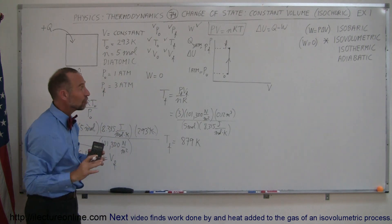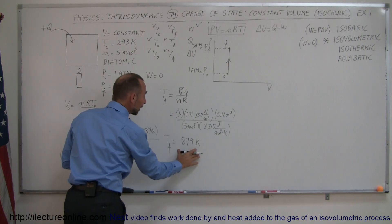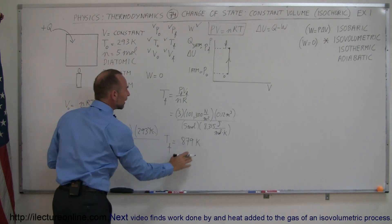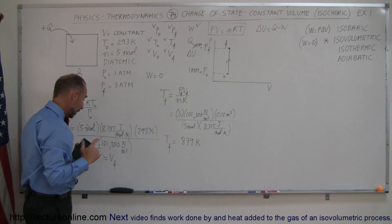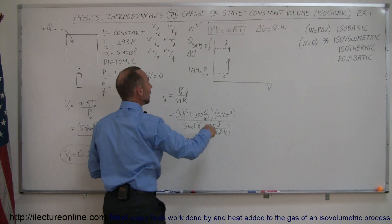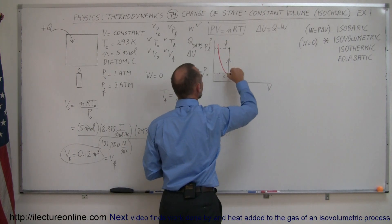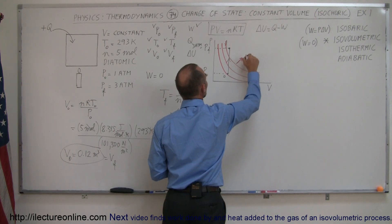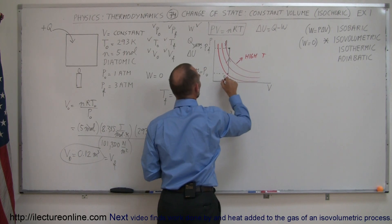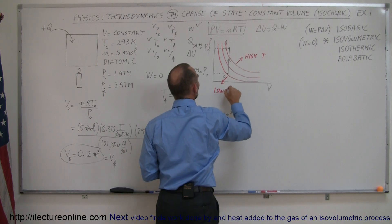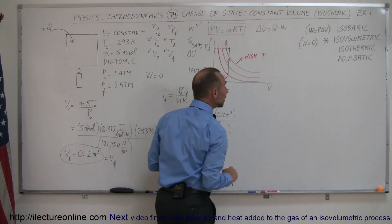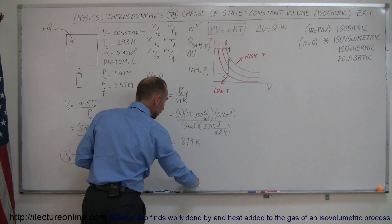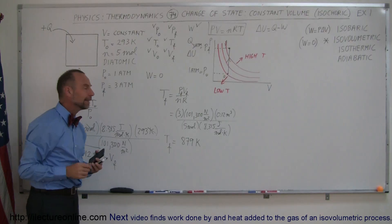As a sanity check: is the final temperature higher than the initial? Initial was 293 K and final is 879 K. If we look at the isotherms on the PV diagram, higher temperature is in the upper-right direction. Since we moved upward on the PV diagram, the temperature should indeed increase — so 879 K looks correct.